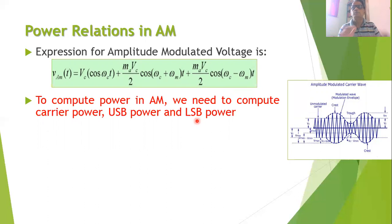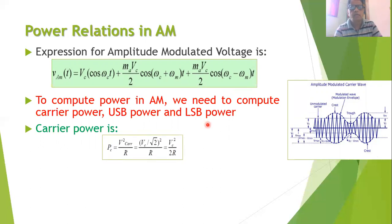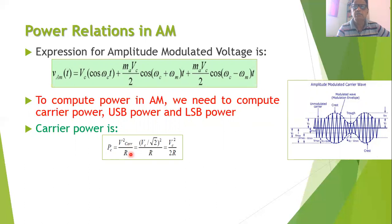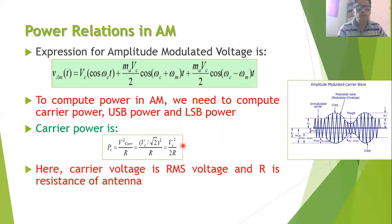The total power is the sum of carrier power plus upper sideband power plus lower sideband power. The carrier power Pc = (Vc/√2)² / R = Vc² / (2R), where Vc is the maximum amplitude of the carrier signal and R is the resistance of the antenna to which the signal is coupled. Note that the carrier voltage used here is the RMS value.